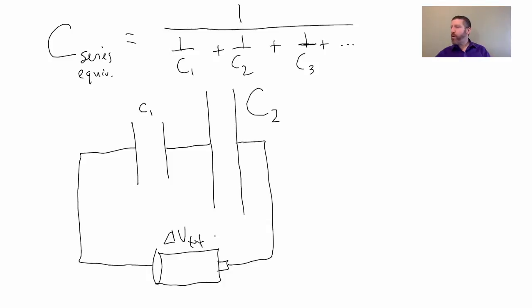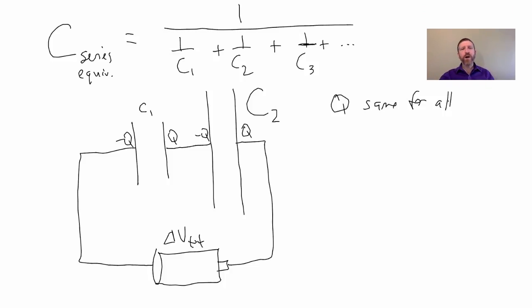Well, which capacitor would have a bigger voltage drop across it? We know that the charge on this capacitor, there's Q on that side and negative Q there, Q on that side, negative Q there. When they're in series, the charge has to be the same.